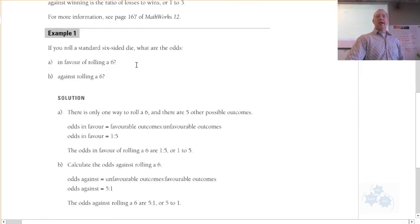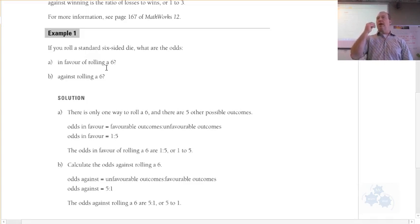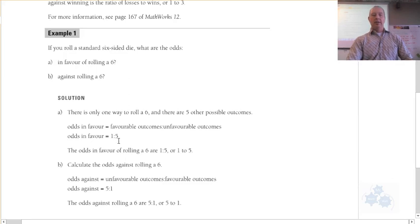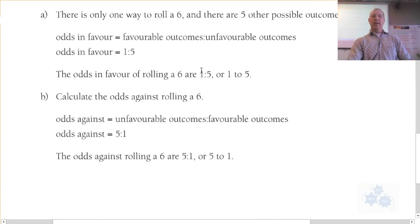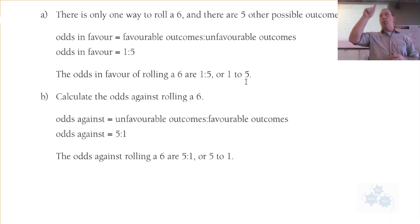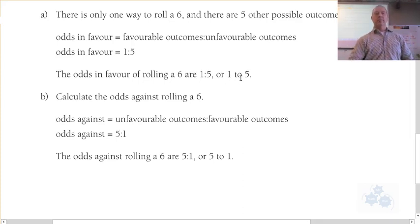If you roll a standard 6-sided die, what are the odds in favor of rolling a 6? You compare the number of desired events — rolling a 6, which is 1 option — to the number of options that are not a 6. So it would be 1 to 5. The odds in favor are 1 to 5. You can write it as 1:5 or in words, but don't write it as a fraction like 1/5, because that represents probability — 1 out of a total of 5.